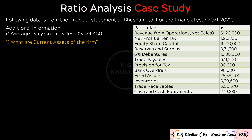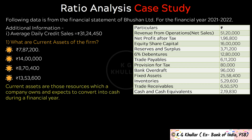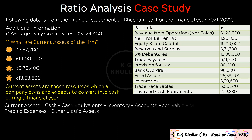The first question is: What are current assets of the firm? Current assets are the resources which a company owns and expects to convert into cash during a financial year. For a company, current assets in the balance sheet can be calculated as: cash plus cash equivalents, plus inventory, plus accounts receivable, plus marketable securities, plus prepaid expenses, plus other liquid assets.